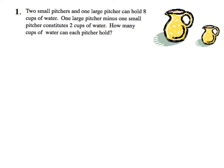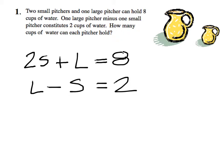Two small pitchers and one large pitcher can hold eight cups of water, so two small plus one large equals eight cups. Then one large pitcher minus one small pitcher constitutes two cups of water.